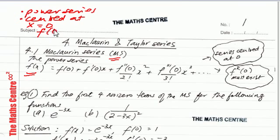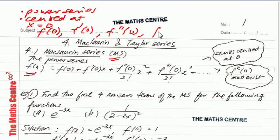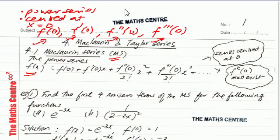Since the series is centered at x equals to 0, that means we are evaluating f of 0, f prime of 0, f double prime of 0, and so on. You differentiate f of x to get f prime x, then evaluate at x equals to 0 to get f prime 0. Then differentiate again to get f double prime x, evaluate at x equals to 0, and continue with f triple prime x at x equals to 0. These are all derivatives: f prime x, f double prime x, f triple prime x, and so on.